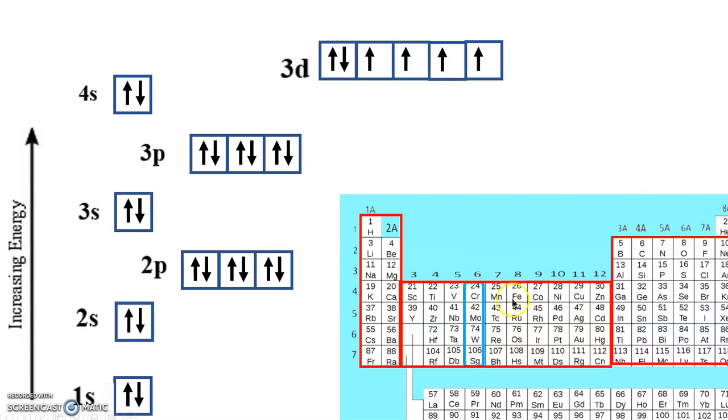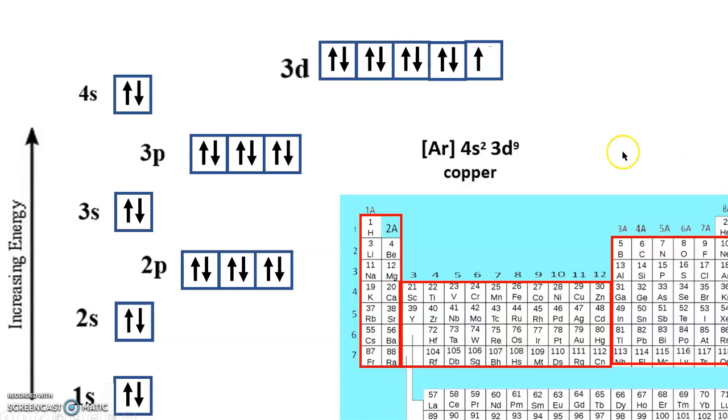So continuing on, iron is 3d⁶. Cobalt is 3d⁷. Nickel is 3d⁸. Copper is 3d⁹, and we're at another situation where we're one electron away from, in this case, a completely full sub-level, which turns out is very unstable. So you would expect copper to be 4s² 3d⁹, based on where it is. It turns out it's not. That doesn't exist in nature like that. It turns out that the same exact thing happens. We borrow an electron from the 4s, and it becomes 4s¹ 3d¹⁰.